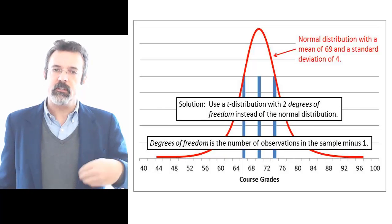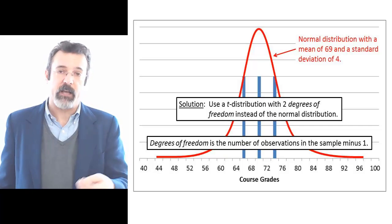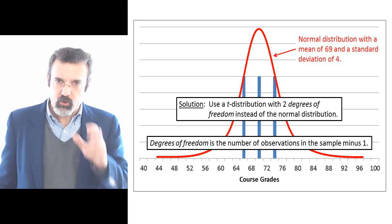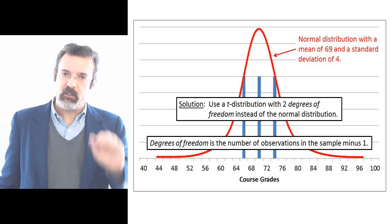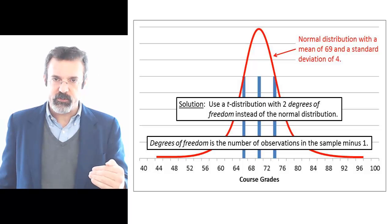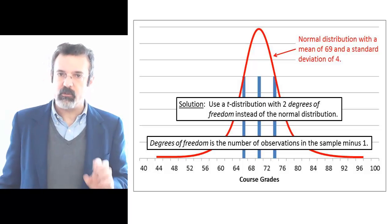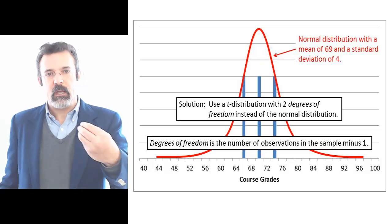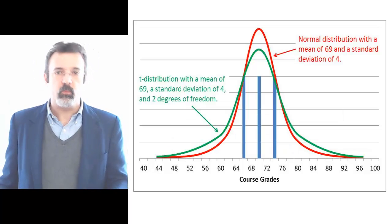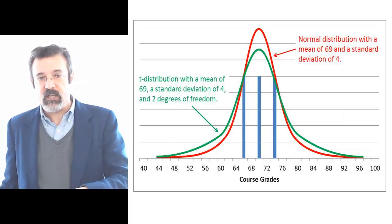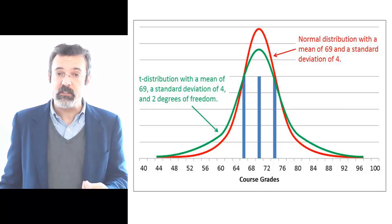Degrees of freedom are the number of observations in the sample minus 1. So to go back to the beginning: we have three observations, we calculate the sample mean of 69 and the sample standard deviation of 4. Because we have so few observations, rather than examine a normal distribution, we'll examine a T distribution with a mean of 69, a standard deviation of 4, and 2 degrees of freedom.